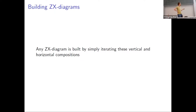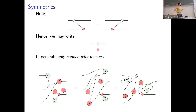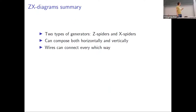Any ZX diagram is built by iterating vertical and horizontal compositions. Importantly, if you calculate the matrix doing first Z then X, or first X then Z, you get the same matrix. So we can write wires vertically — whether they go forwards or backwards doesn't matter for the linear map. In fact, only connectivity matters. You can arbitrarily deform these diagrams and they represent the same linear map. This means you can treat them as undirected graphs, which is very convenient for software.